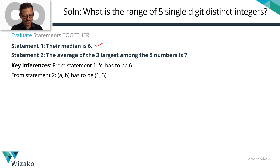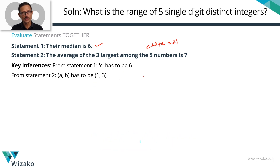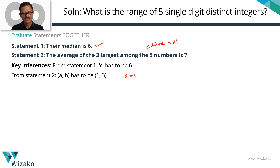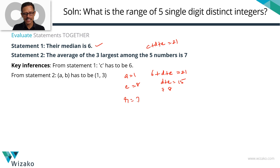Combining both statements: c + d + e = 21 and c = 6, so d + e = 15. Both d and e must be greater than 6 and distinct. The only possible pair is d = 7 and e = 8. We have a unique value for e = 8 and a = 1, giving a unique range of 8 − 1 = 7.